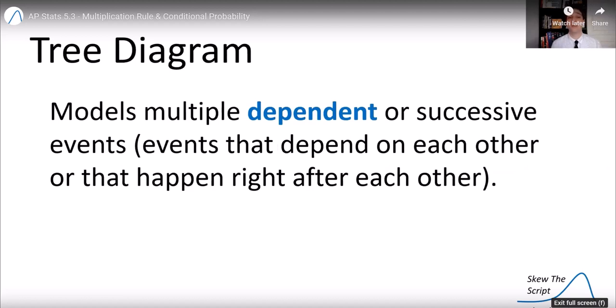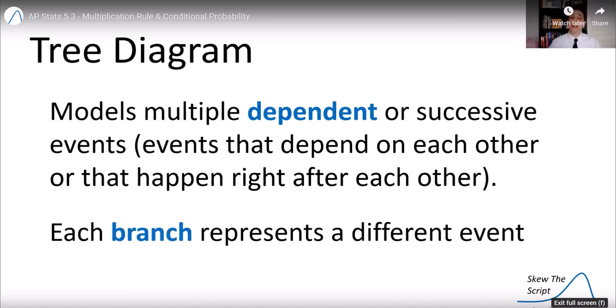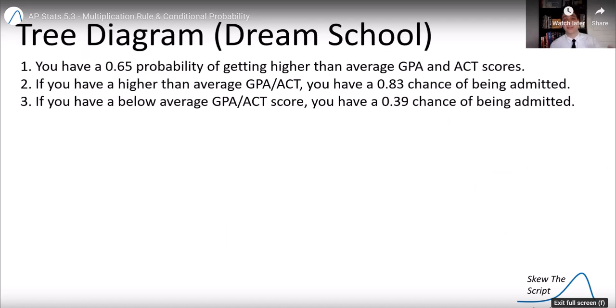Tree diagrams model multiple dependent or successive events. And each branch of the tree represents a different event. So let's look at an example here.